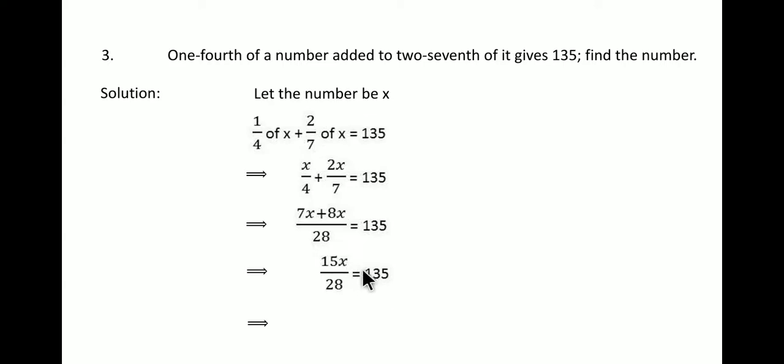Now x is equal to 135 cross multiply, 28 goes in the numerator and 15 comes in the denominator. So 135 into 28 by 15. 15 will cancel 135 nine times. So x is equal to 9 into 28. And when you multiply 9 into 28, the answer is 252. Therefore, the required number is 252.